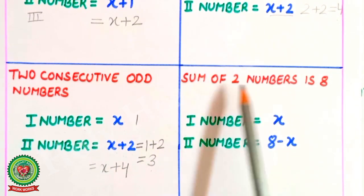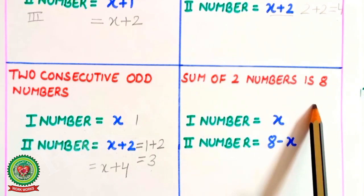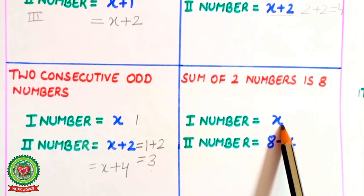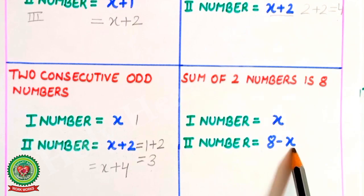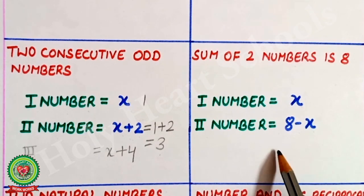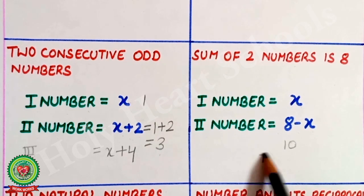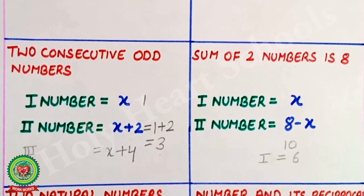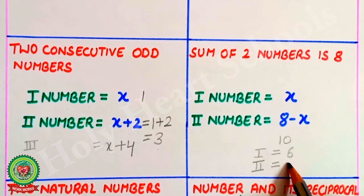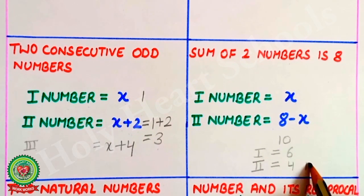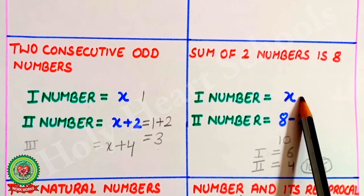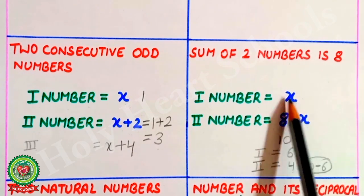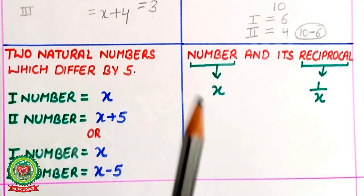For the case where the sum of two numbers is 8, let the first number be x, then the second number is 8 minus x. For example, if total money is 10 rupees and one person has 6 rupees, the second person has 10 minus 6 equals 4 rupees. So the second number is always the total minus the first number.